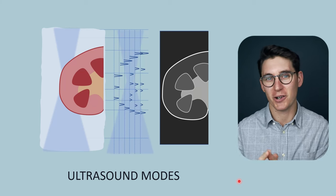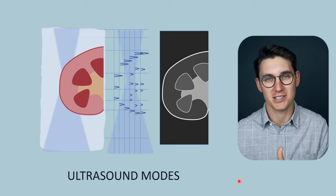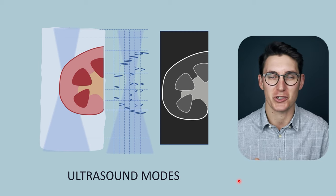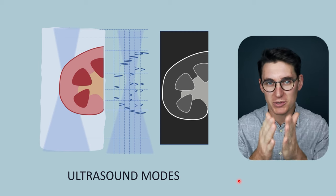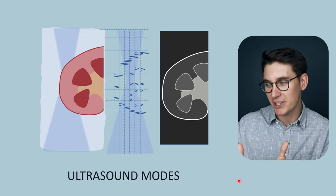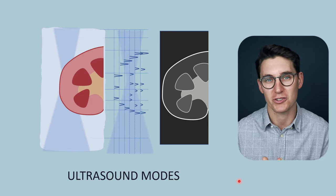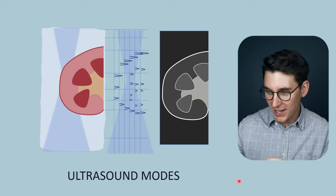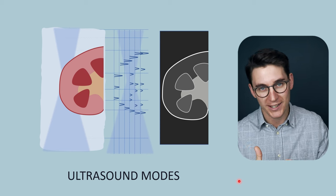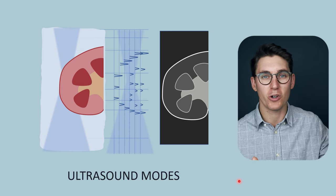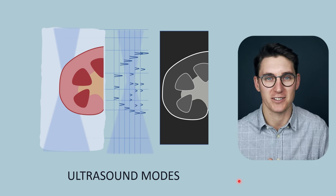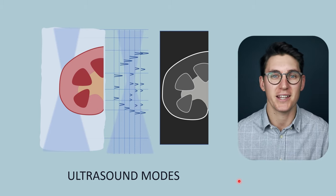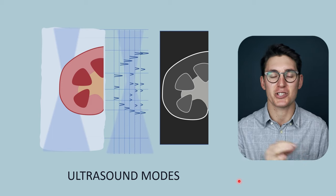Hello and welcome back. We've looked at the generation of ultrasound pulses as well as the reception of those echoes returning back to the ultrasound transducer. We saw it was the piezoelectric material that both created and received those ultrasound pulses. Now that we're receiving those echoes and we've converted that mechanical force into an electronic signal, how can we go about interpreting that signal? The ultrasound machine has multiple different ways of displaying that information, and we call these ultrasound modes.